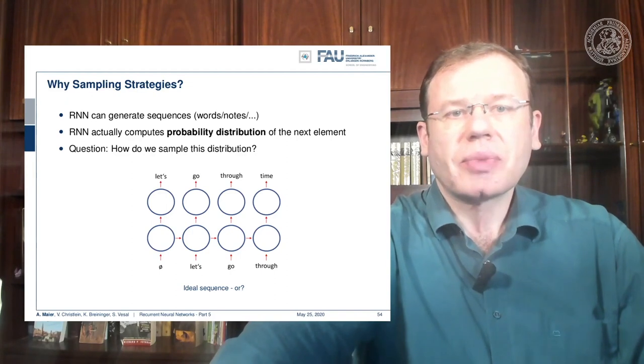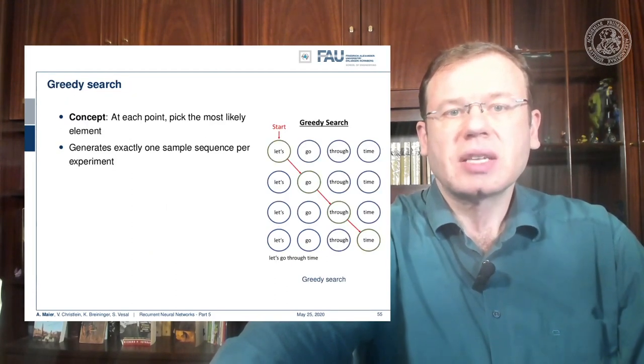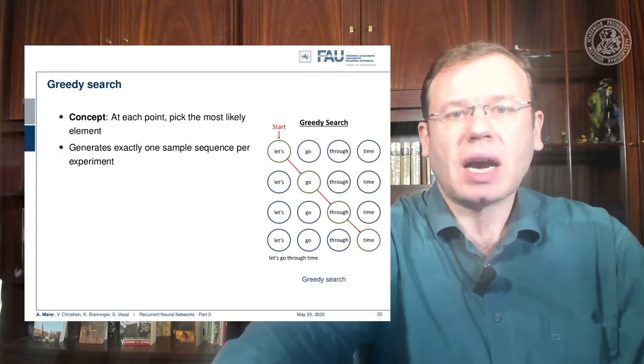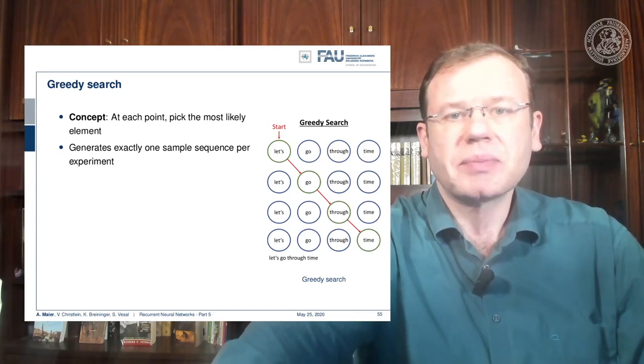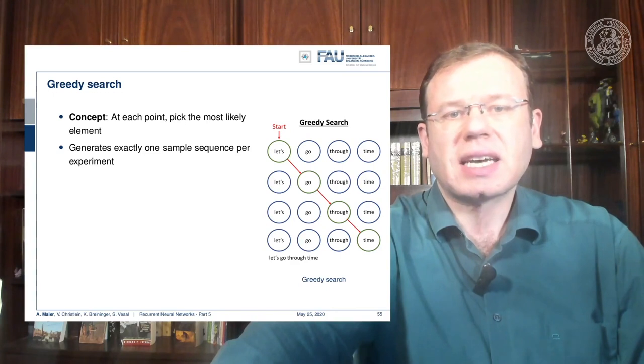The simple strategy is to perform a greedy search. Here we start with the empty symbol and then we just pick the most likely element as the input to the RNN in the next state, and generate the next one and the next one. This generates exactly one sample sequence per experiment.